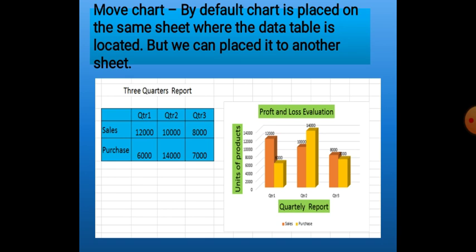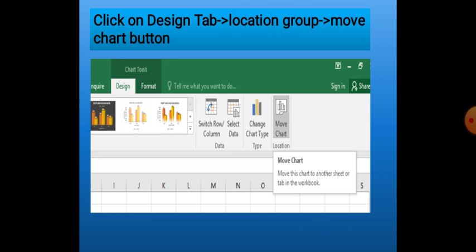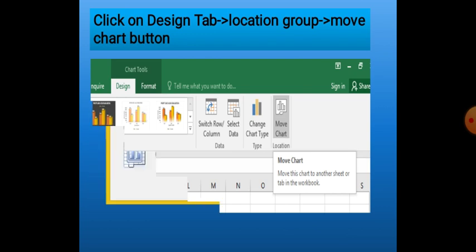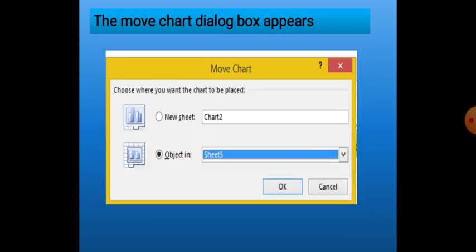The next feature in Excel is the Move Chart option. By default, when we create a chart, the chart is placed as an object on the same sheet where the data table is. But if we want to place it on another sheet, we will use the Move Chart button. The Move Chart button is located in the Design tab, in the Location group. When we click on Move Chart, the Move Chart dialog box appears.